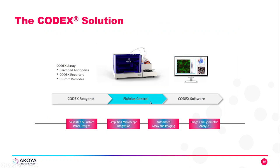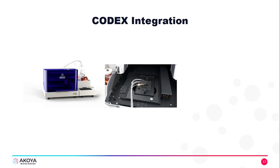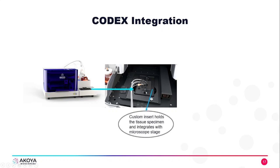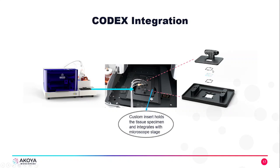Moving on to the fluidics control and the Codex automation, Codex integrates with a microscope to allow for imaging of our tissue section. You can see the fluidic lines feeding to the microscope stage right here. This custom insert holds the tissue and integrates with the microscope stage, where two gaskets are sandwiching the cover slip that will have our tissue on it. That's how Codex integrates with the microscope.